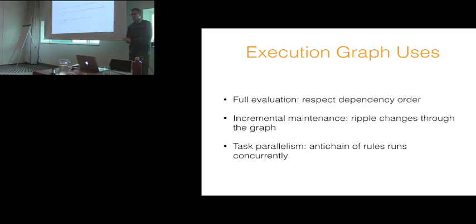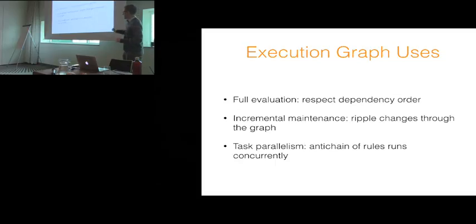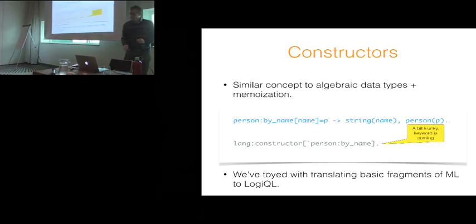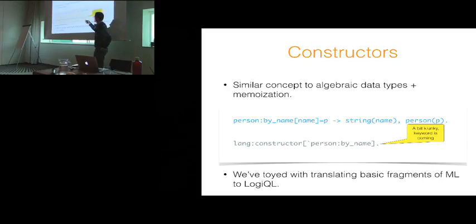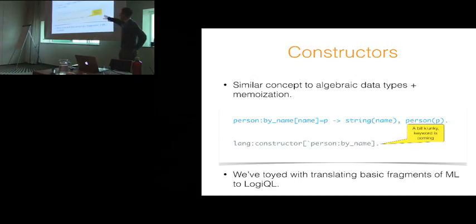We use the execution graph for three primary purposes. In full evaluation, we use it to respect dependency orders. In incremental maintenance, you can think of this as rippling changes through the execution graph. And we use it also for task parallelism — any anti-chain of rules can be run concurrently without conflicts. The language also has constructors, which you can think of as algebraic data types with memoization. You can create a new person by giving them a name, and it'll automatically give you a person identifier. Currently the syntax is a bit clunky, but we're adding a keyword shortly, and this is sufficiently powerful that we've toyed with translating small fragments of ML into this.